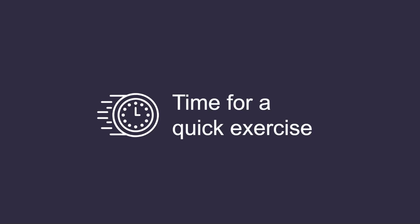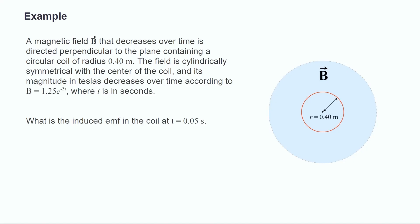Let's take a look at an example problem and apply what we've learned. In this example, we have a coil with a radius of 0.40 meters in a symmetrical magnetic field that decays in magnitude. According to the equation, b equals 1.25 times e to the power of negative 3t, where b is in Teslas and t is in seconds. We're being asked to find the EMF in the coil at 0.05 seconds.